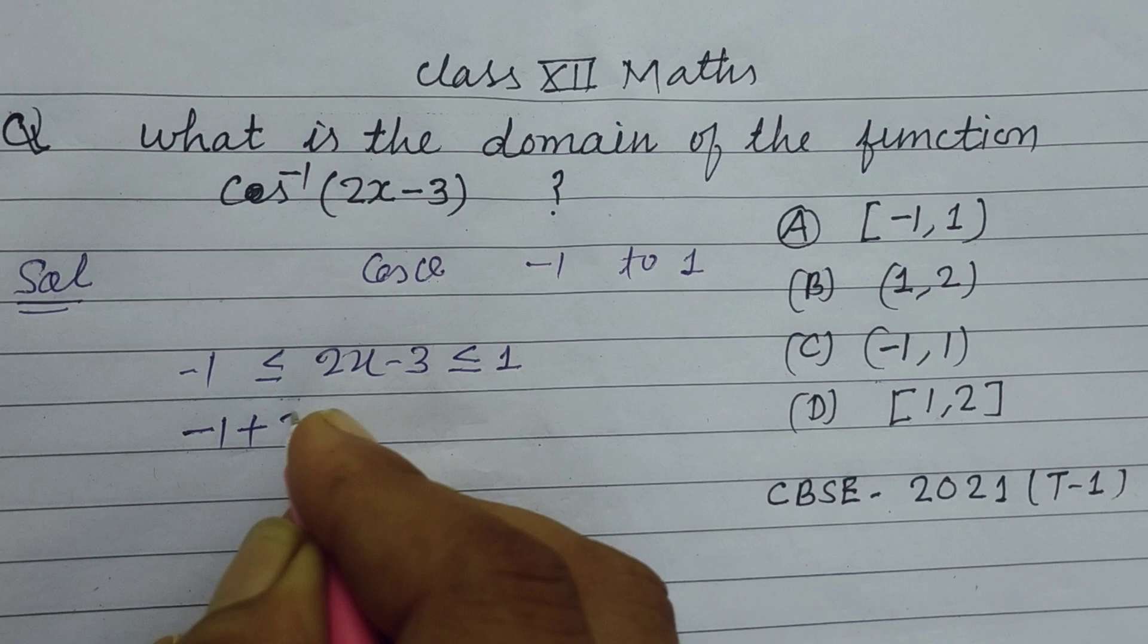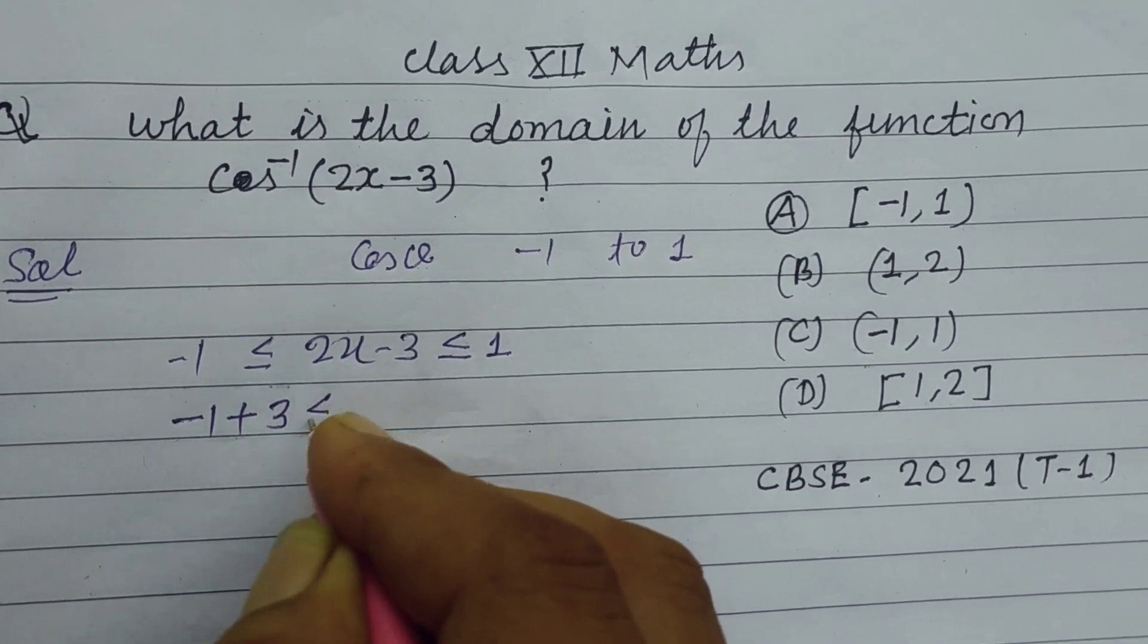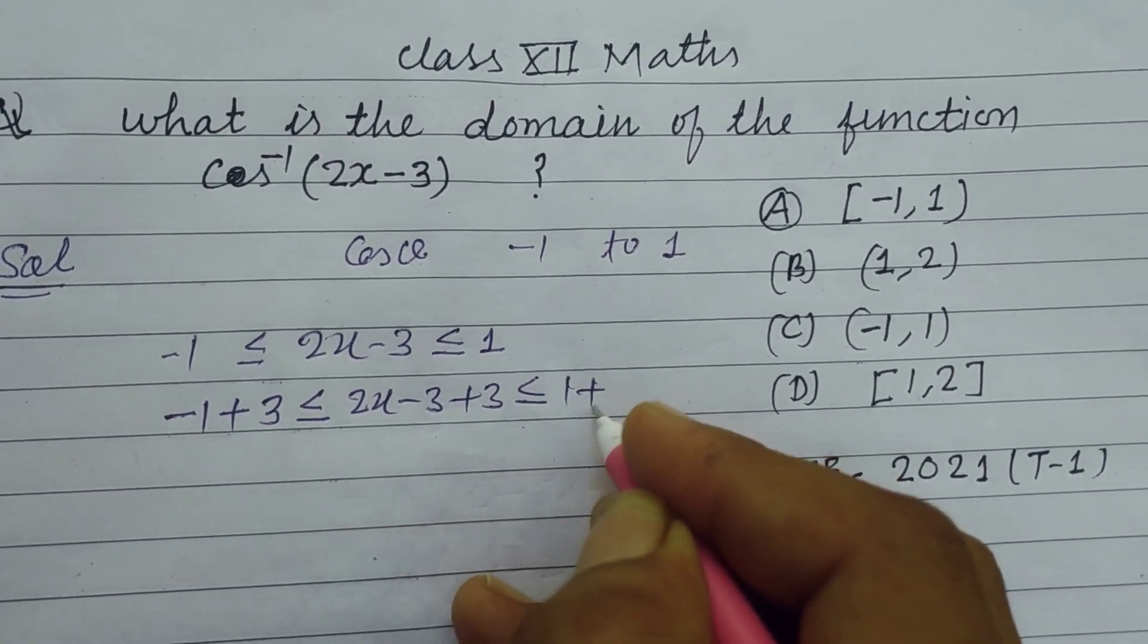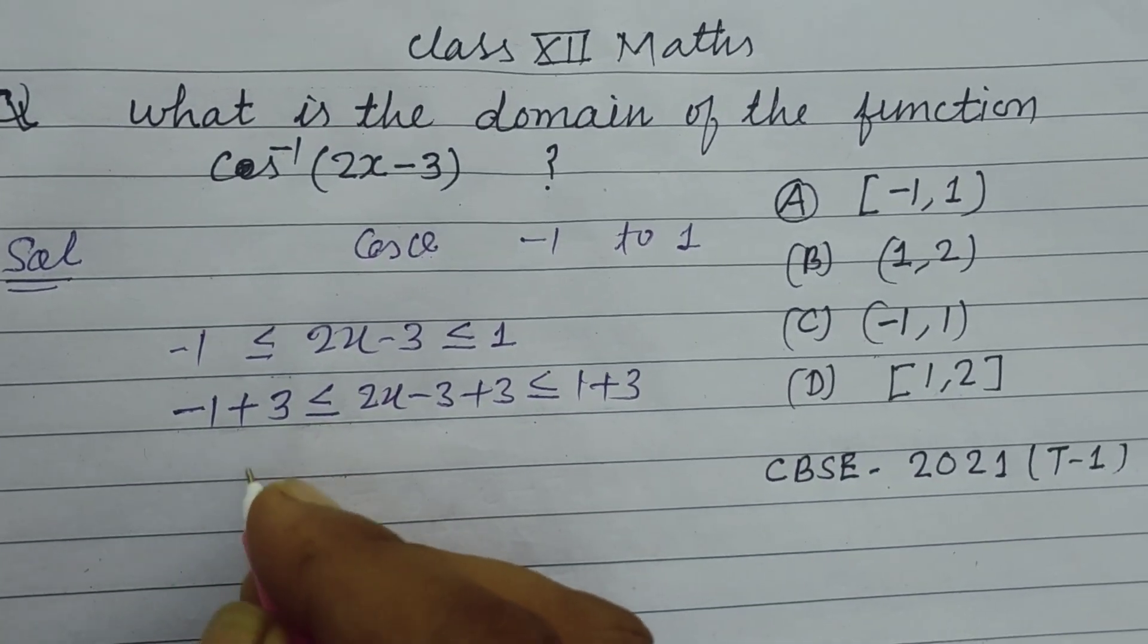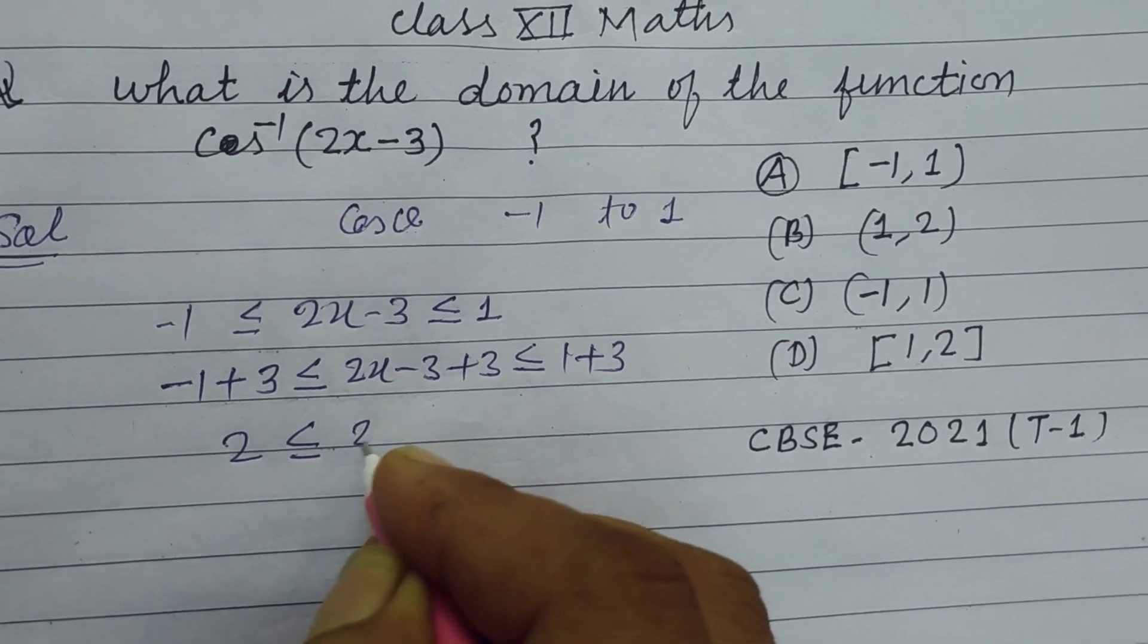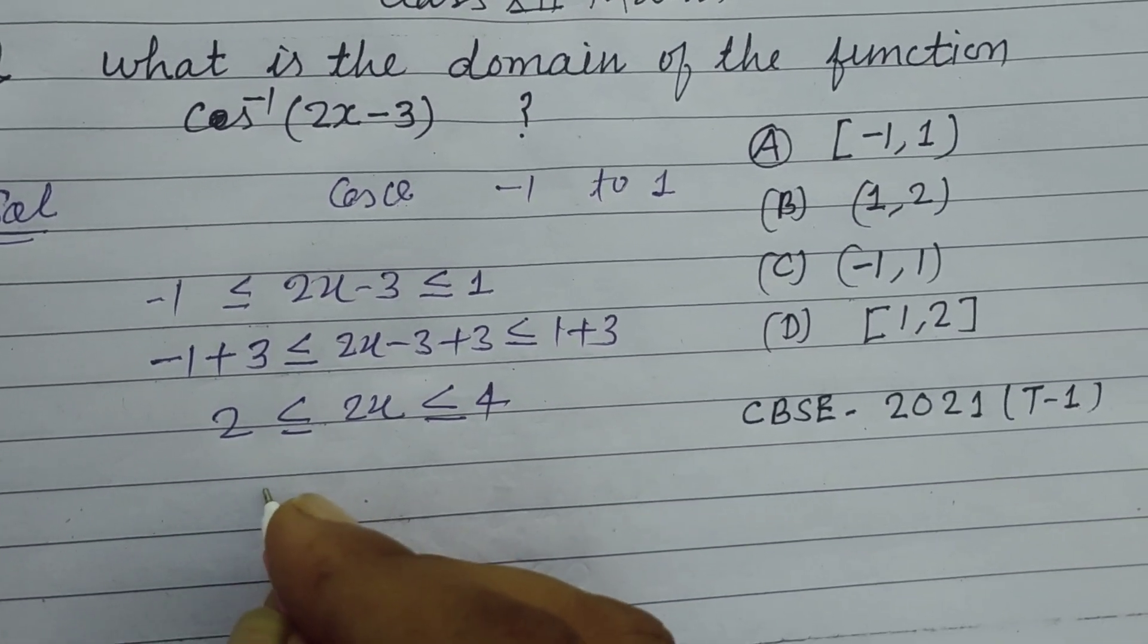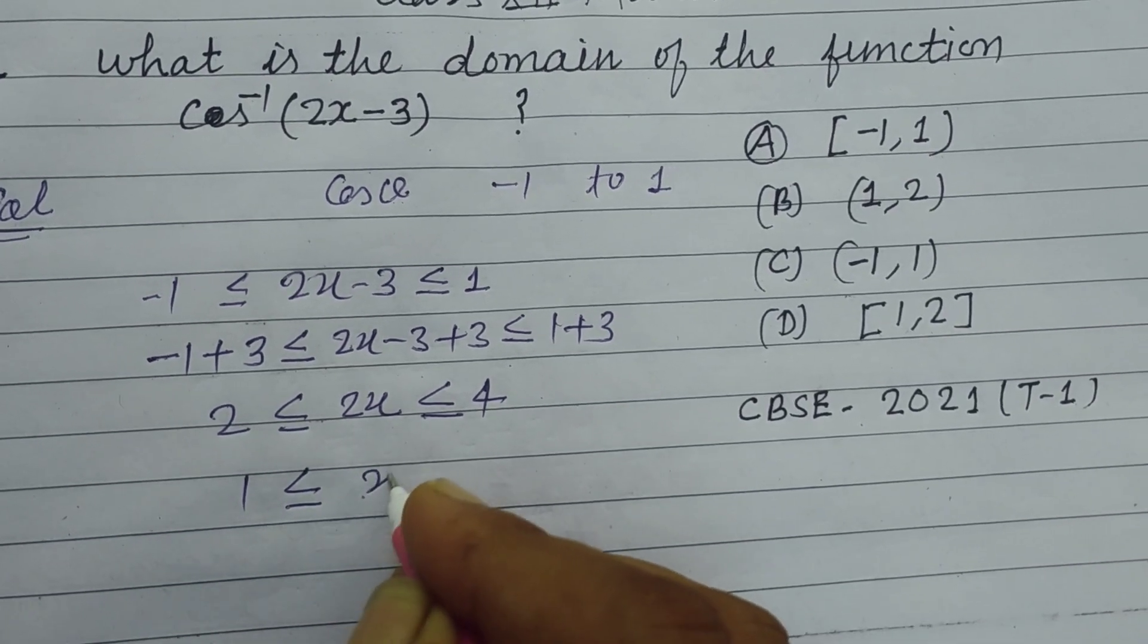So 1 plus 3, 2x minus 3 plus 3, 1 plus 3. This is 2, 2x, and this is 4. Now dividing by 2, 1 less than x.